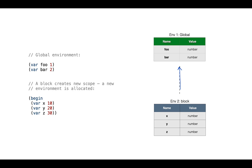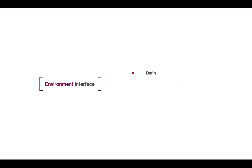Environment 2 has access to variables x, y, and z, and also to foo and bar through the parent chain via the identifier resolution process. Environment 1 has access only to foo and bar. To reiterate, the interface of an environment is: defining a variable, assigning a new value to an existing variable, and variable lookup — that is, access of a variable.